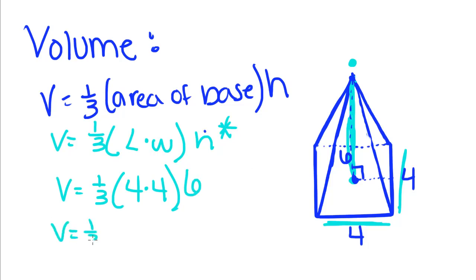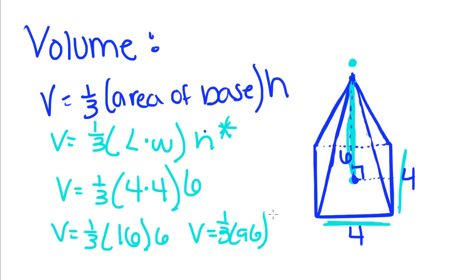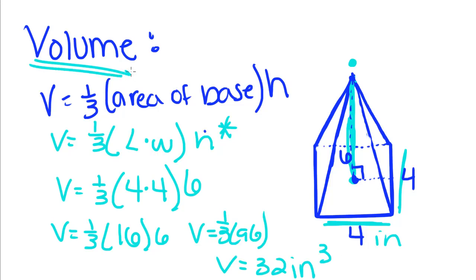So: one-third times four times four, which is sixteen, times six. Sixteen times six is ninety-six, and one-third of ninety-six gives us V equals thirty-two. If this said inches, it would be thirty-two inches cubed, because we're talking about volume, and volume is always a three-dimensional measurement.